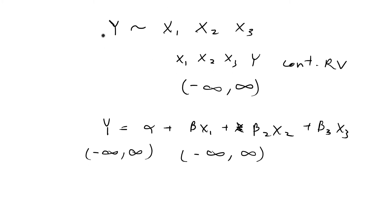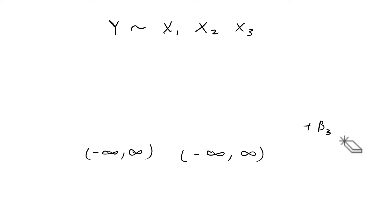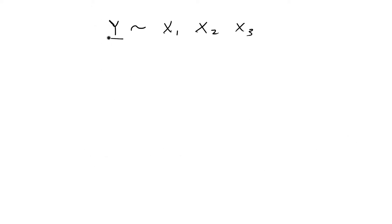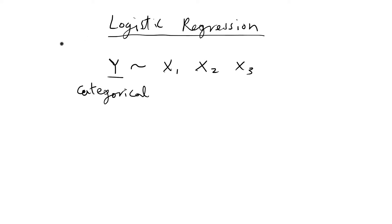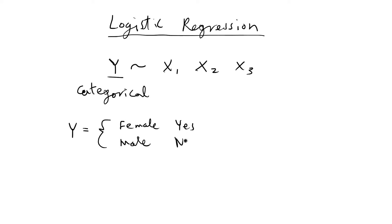When you're doing logistic regression, you're going to have a slightly different type of model. Instead of having a continuous random variable y, the outcome variable is now going to be categorical. Usually when talking about the basics of logistic regression, we consider y as a binomial random variable, so y can have two outcomes. This could be any categorical variable — for example, gender with male/female, yes/no, or disease/no disease.